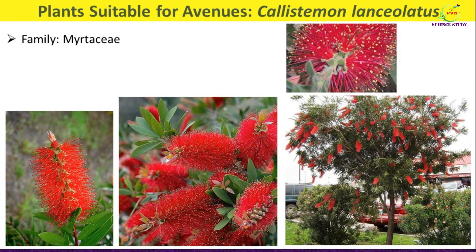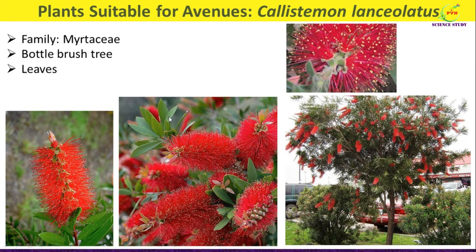The next tree is Callistemon lanceolatus, belonging to family Myrtaceae. It is commonly known as the bottle brush plant because of the appearance of its inflorescence. Here you can see the inflorescence of the plant, which looks like a bottle brush. It is a small erect-growing Australian tree with a neat growth. The leaves are small, stiff, narrow, pointed, and aromatic in nature.